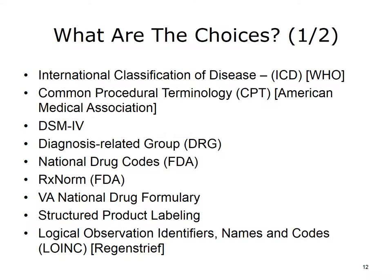There are over 400 different terminologies in use throughout the U.S. today. The more important and popular of these terminologies include: International Classification of Disease (ICD), WHO — current version in the U.S. is ICD-10; Common Procedural Terminology (CPT), American Medical Association; Diagnostic and Statistical Manual of Mental Disorders (DSM), American Psychiatric Association; Diagnosis Related Group (DRG); National Drug Codes (NDC), FDA; RxNorm, FDA; VA National Drug Formulary; Structured Product Labeling, FDA/HL7; and Logical Observation Identifiers Names and Codes (LOINC), Regenstreif.